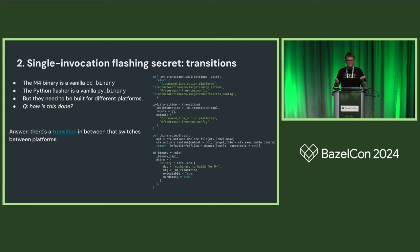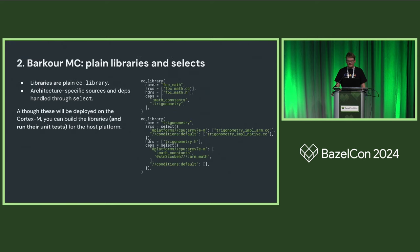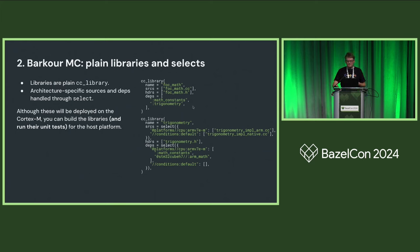The M4 binary is just a vanilla CC binary and the Python flasher is a vanilla py_binary. To tell Bazel they need to be built for different platforms, we use a transition. The M4 binary custom rule consumes a CC binary and tells it to be built for a different platform — that's where all knowledge of the target platform resides. Below that, CC libraries for specific functionality are expressed using vanilla Bazel primitives, with selects at the bottom for low-level architecture-specific details.